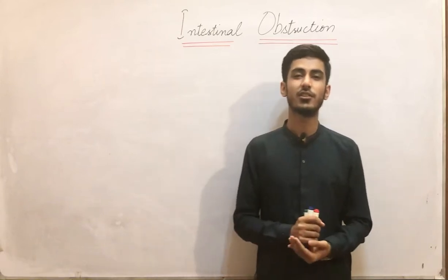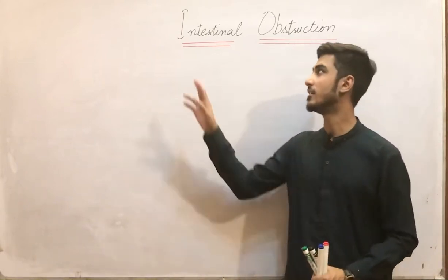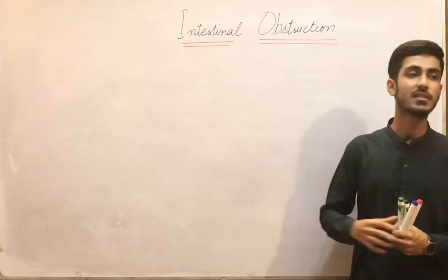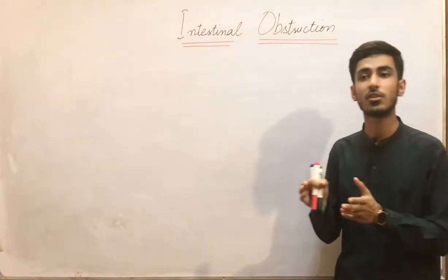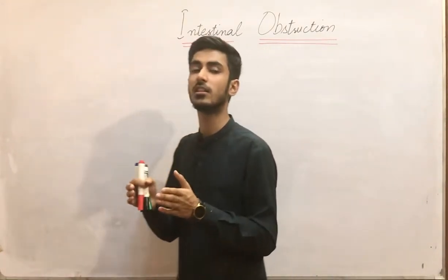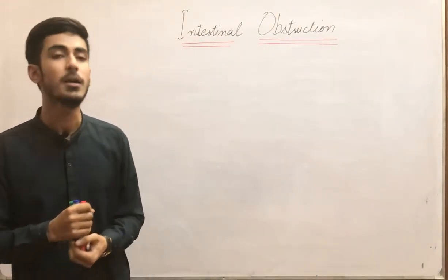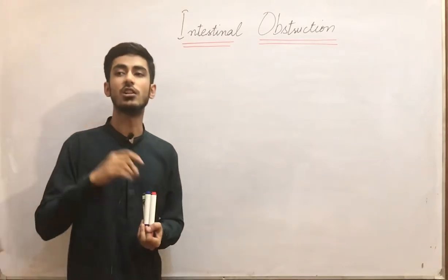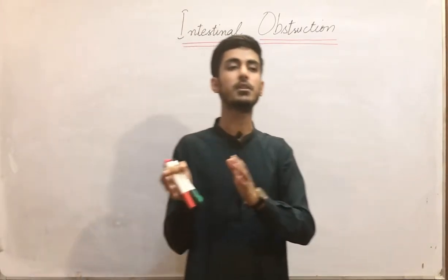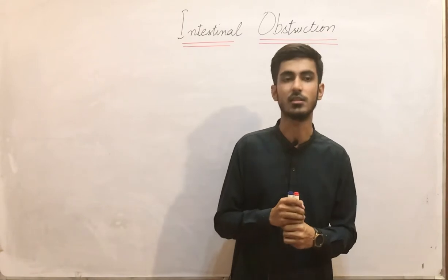This is Dr. Saad, and today my topic is intestinal obstruction. Basically, intestinal obstruction mainly occurs in the small intestine because the lumen of the small intestine is narrow compared to the other parts of the intestine.